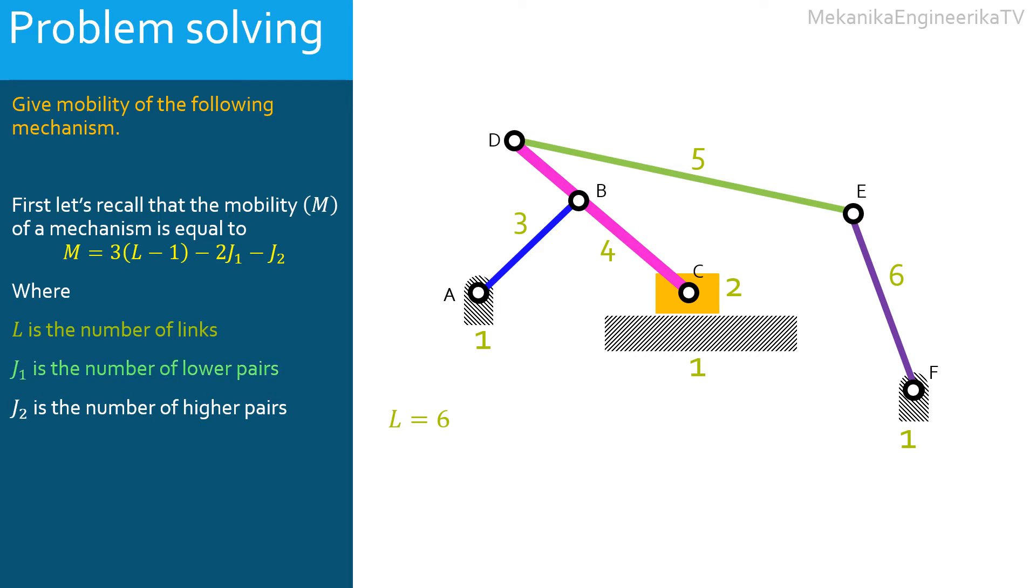The lower pairs here are the pin or rotating joints. There is one prismatic pair connecting the ground to the slider. There are 6 pin kinematic pairs, all are simple and connecting 2 links each. Thus each pin joint is counted once.